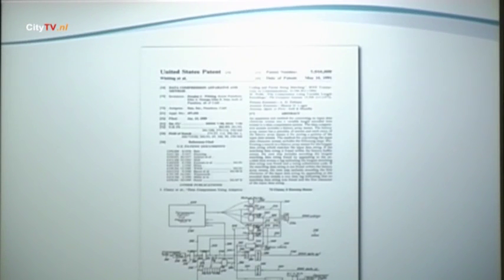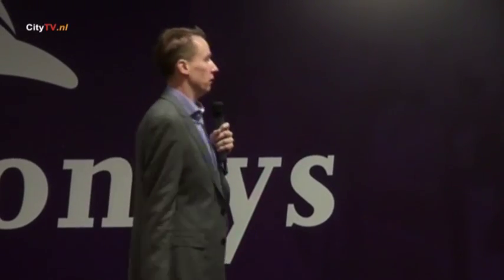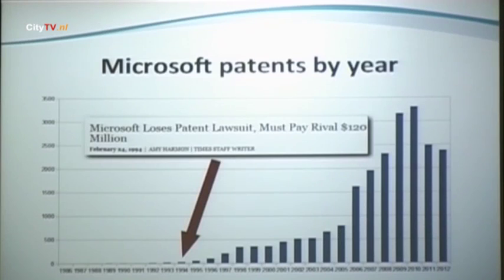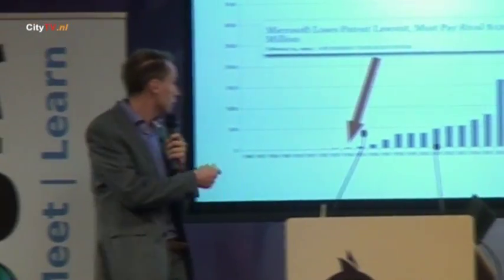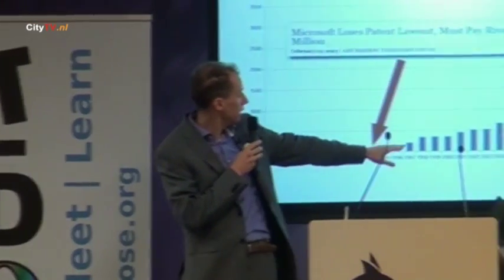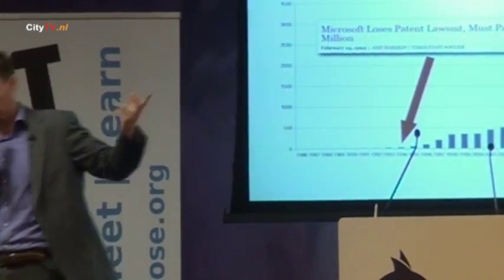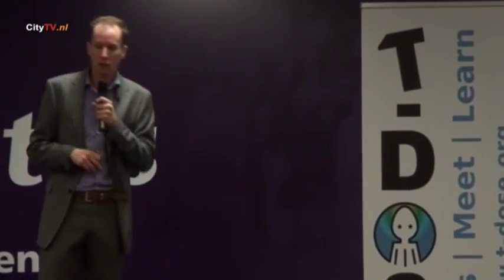Microsoft was infamous for copying other people's ideas - they'd say 'come show us your technology,' then implement it themselves. Stacker was one of very few companies that said 'we have a patent' and won. So Microsoft said 'this is a problem, let's file patents of our own.' If you look at Microsoft patents by year, you see after that lawsuit there was an enormous increase in their patent filings - with a distinct dip three to four years later, which is about the average time to get a patent.